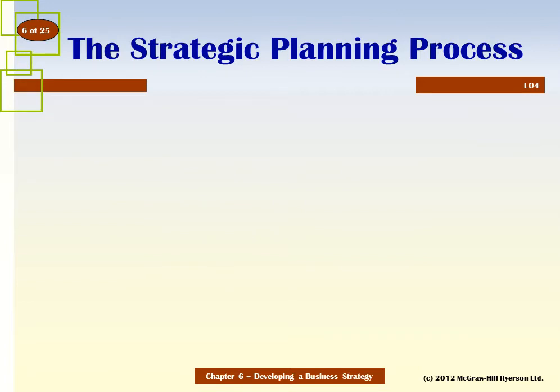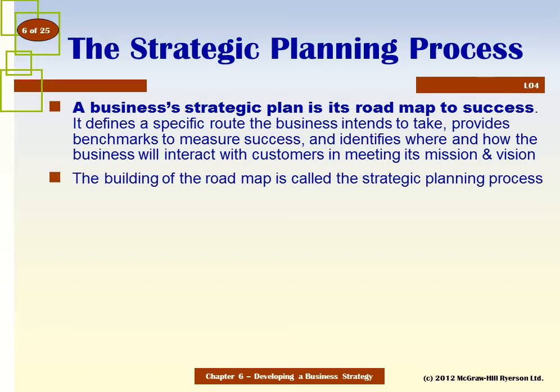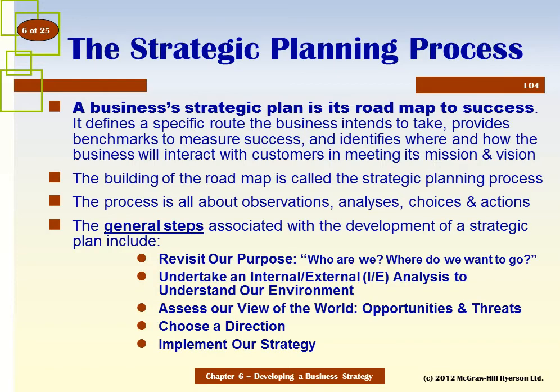Let's take a look at how to develop our strategy and some of the tools for success. The strategic plan is really the roadmap to the strategic planning process — we've got a destination we want to get to, so let's plan the route on how we will get there. Building that roadmap is called the strategic planning process, and it's all about making choices and defining actions.